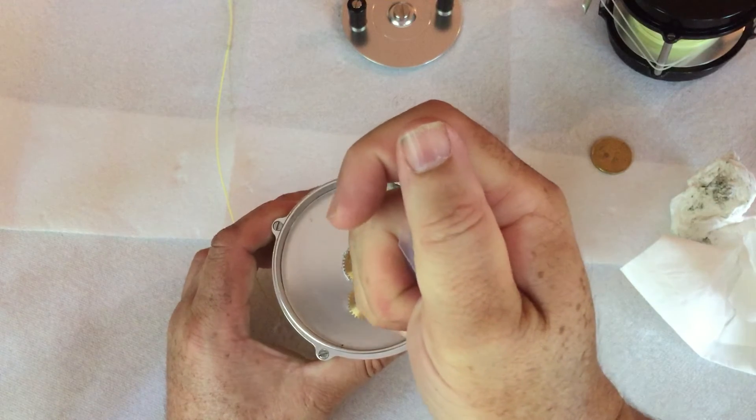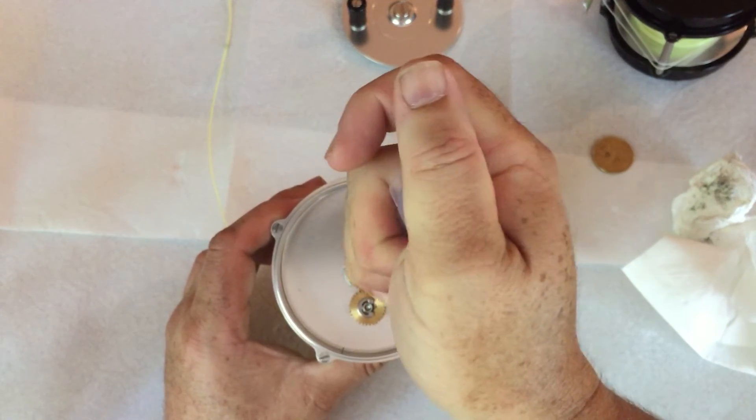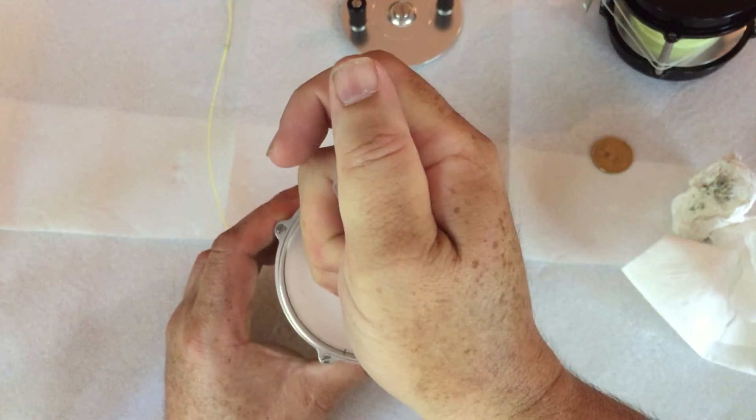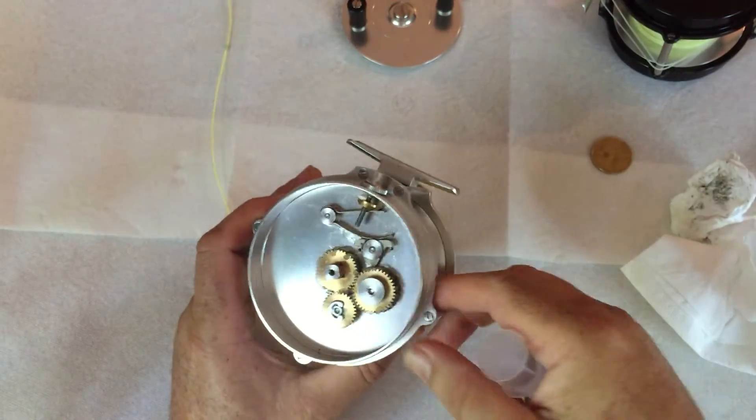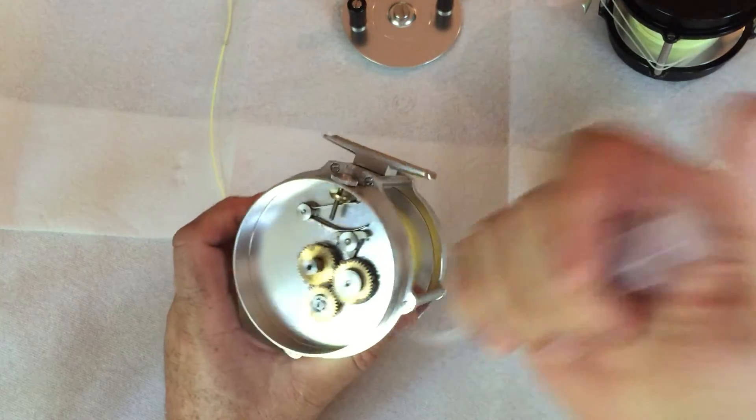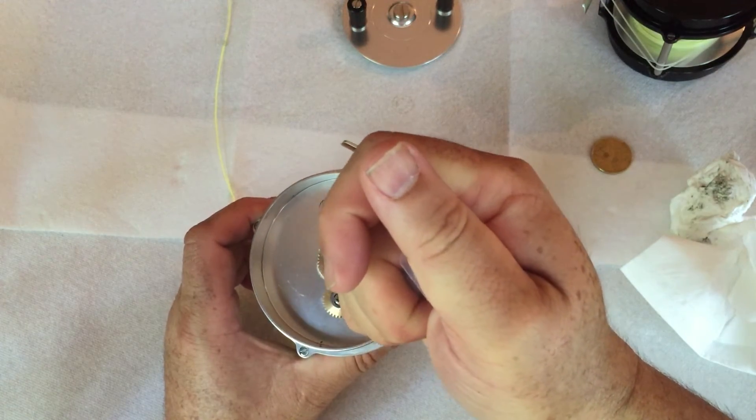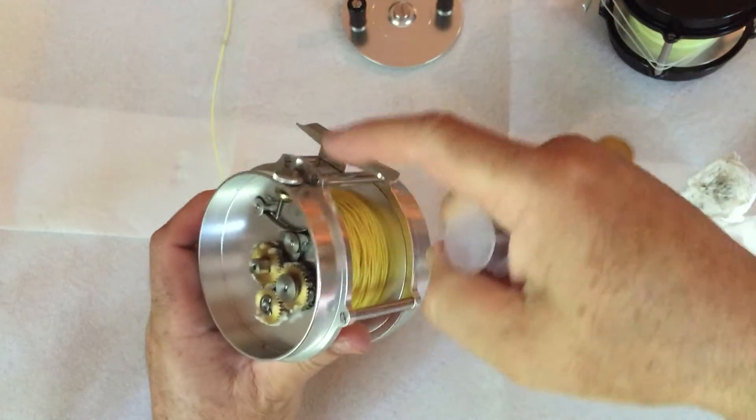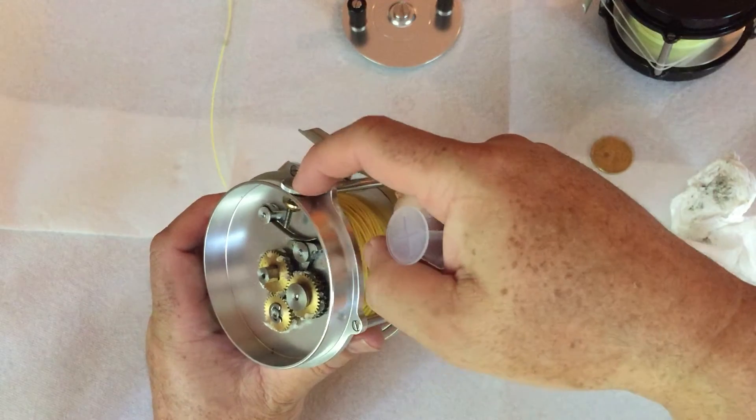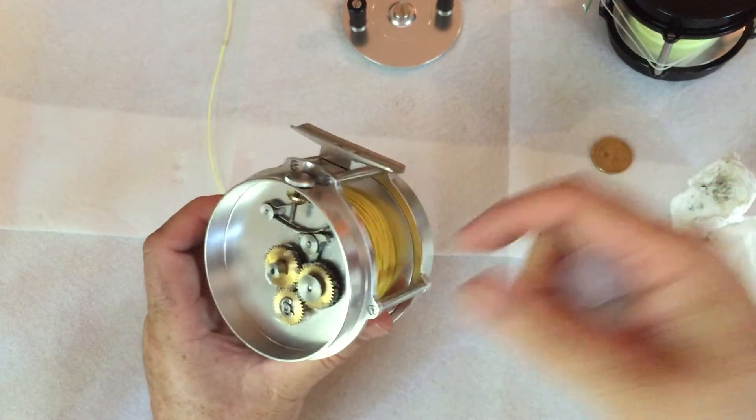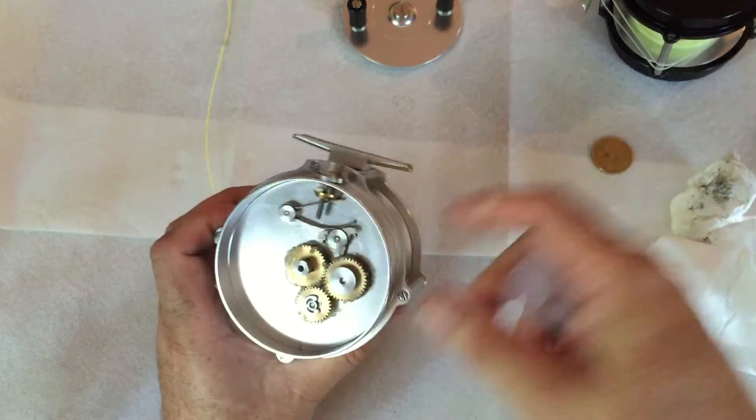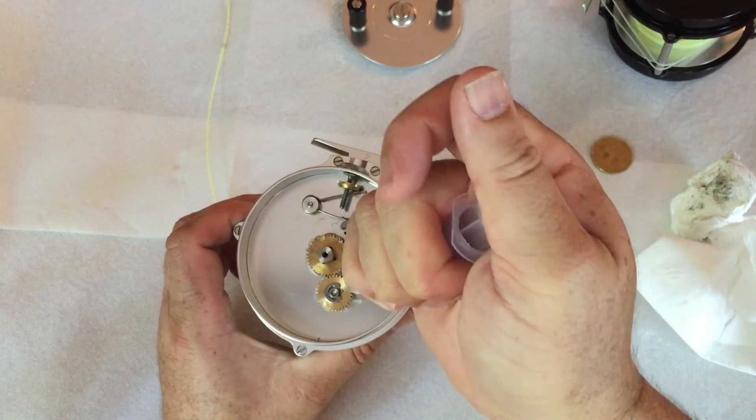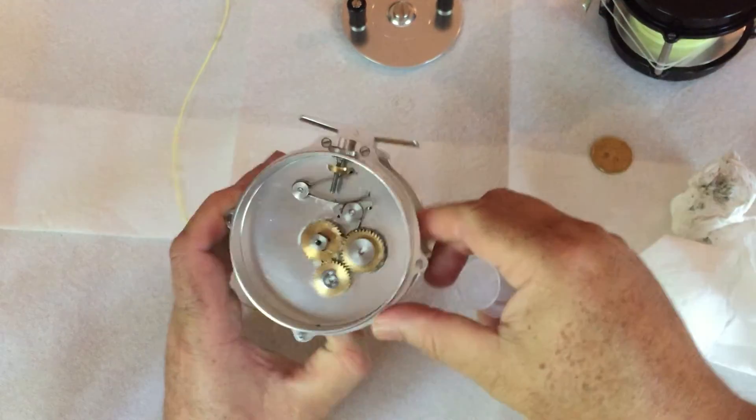Now in this case, this one is set to left hand wind. This reel can have this idle gear in either position, which would allow the thumb screw to be right or left. But anyhow, I just extrude some grease in. You can spin it around and make sure you get it on the spots that are contacting.